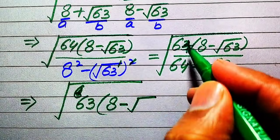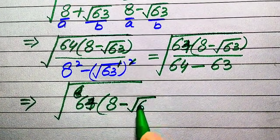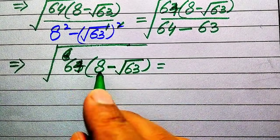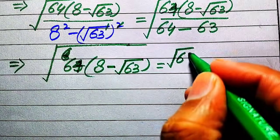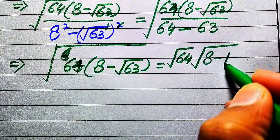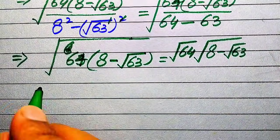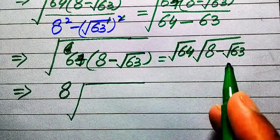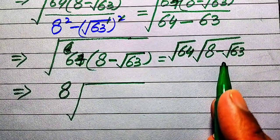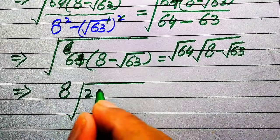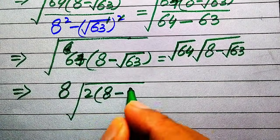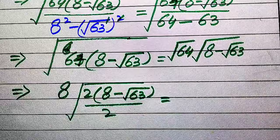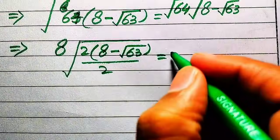We now have the square root of 64 times (8 minus square root of 63). We apply the square root separately to both values: square root of 64 times square root of (8 minus square root of 63), which gives us 8 times square root of (8 minus square root of 63). Inside the square root, we multiply and divide by 2, giving us square root of 2 times (8 minus square root of 63) divided by 2.